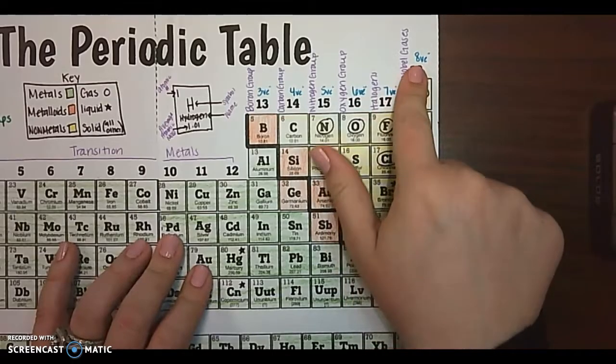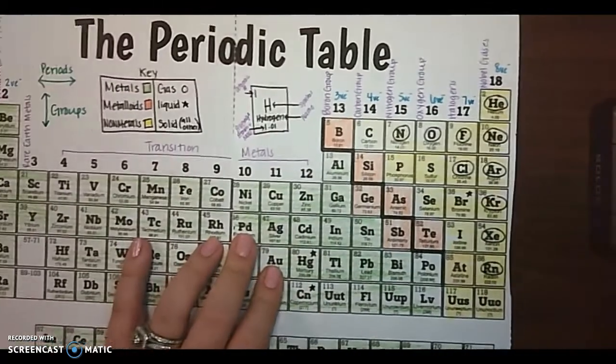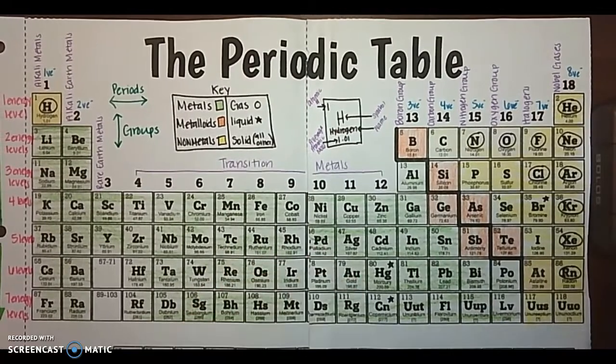So you need to know all of the different group names and how many valence electrons they have. So that's what you're going to label now. If you need to pause your video and label that, you can do so.